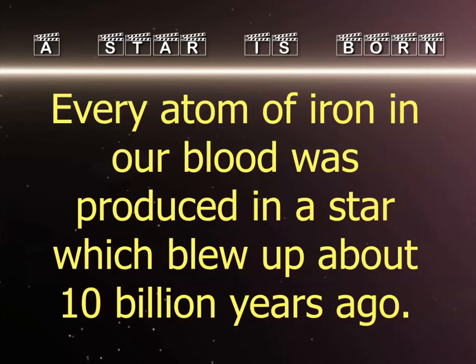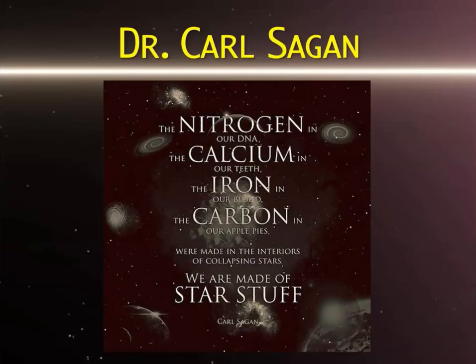Carl Sagan pointed out in the Cosmos series that every atom of iron in our blood was produced in a star that blew up about 10 billion years ago. Jewelry you wear — gold, silver — or silver fillings and crowns, are material that resulted from the death of a high mass star. As Sagan said: 'The nitrogen in our DNA, the calcium in our teeth, the iron in our blood, the carbon in our apple pies — we're made in the interiors of collapsing stars. We are made of star stuff.'